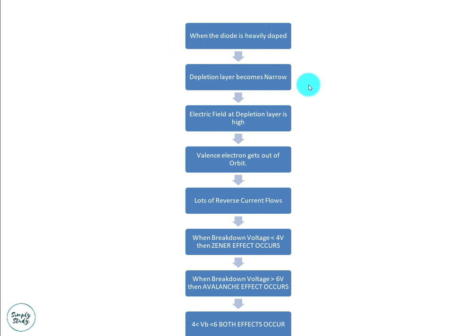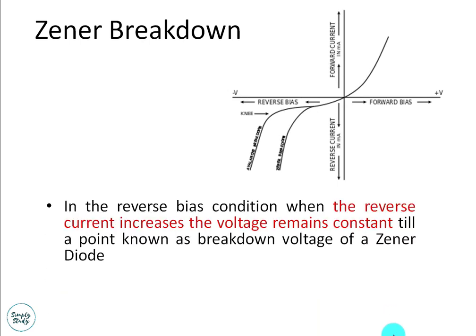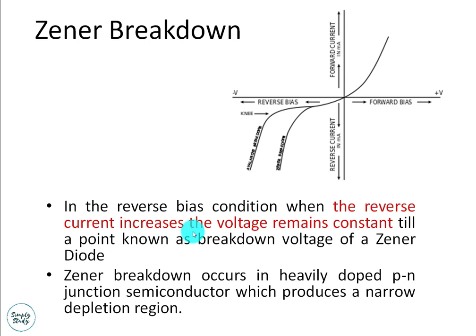When the diode is heavily doped, the depletion region becomes narrow, the electric field at the depletion region becomes high, and the valence electron gets out of orbit. Due to this, a lot of reverse current flows through the circuit and breakdown occurs. When the breakdown voltage is less than 4 volts it is called Zener effect, when it is greater than 6 volts it is called avalanche effect, and between 4 and 6 volts both effects occur. In a Zener diode under reverse bias, the voltage remains constant until the breakdown voltage is reached.